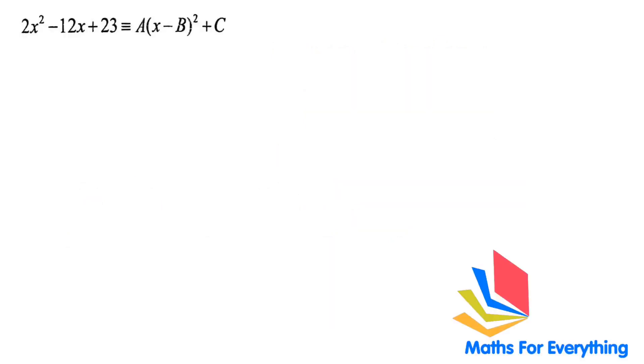So the first question is 2x² - 12x + 23 is identical to a(x - b)² + c. This question is different from the other questions that we did that there are no numbers here, so we cannot use a value for x.